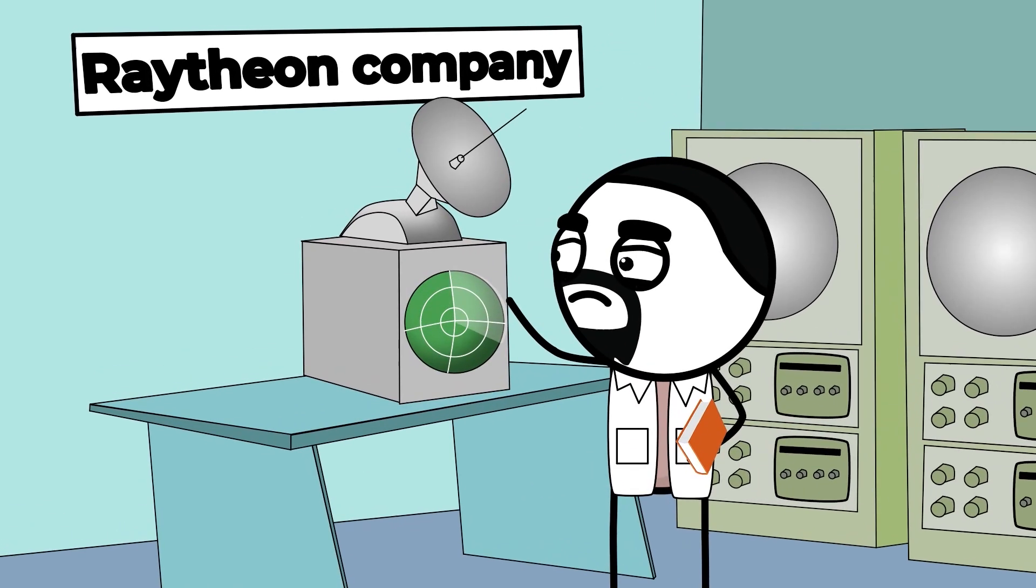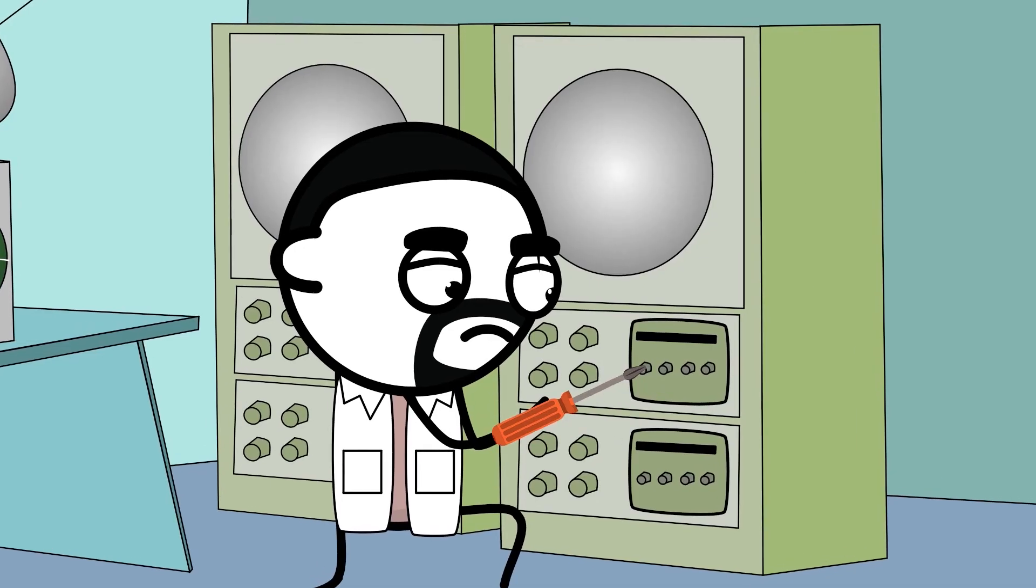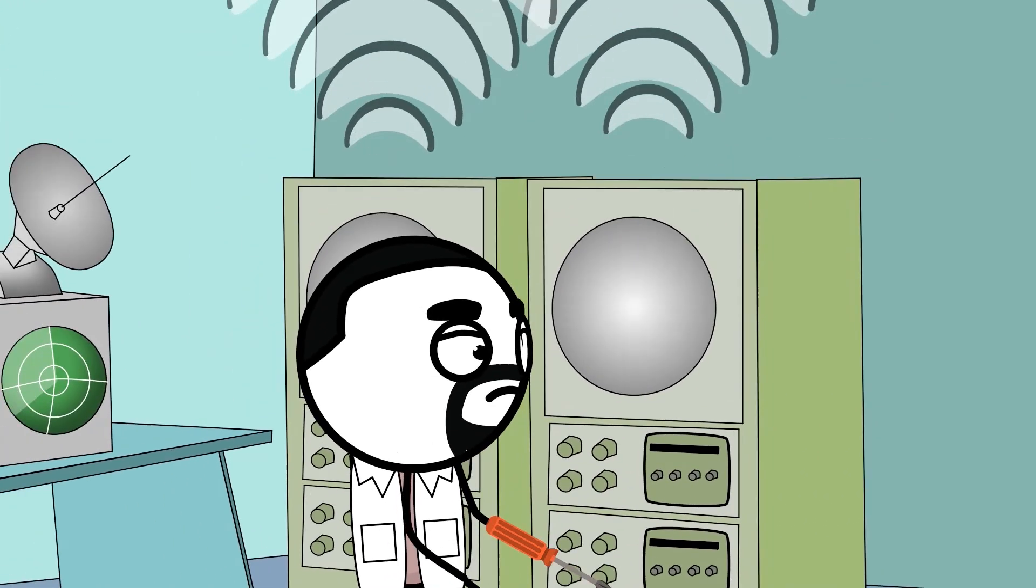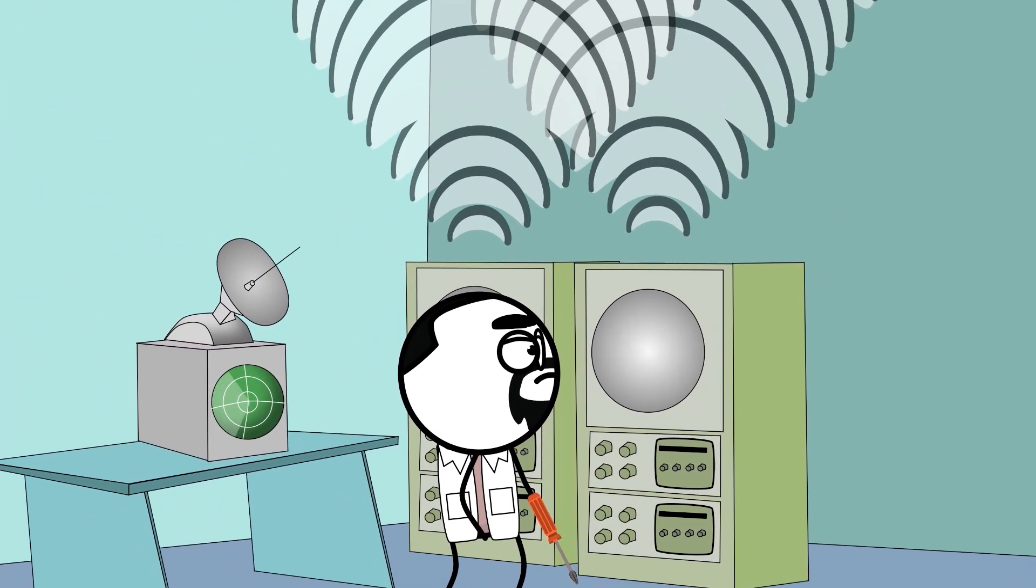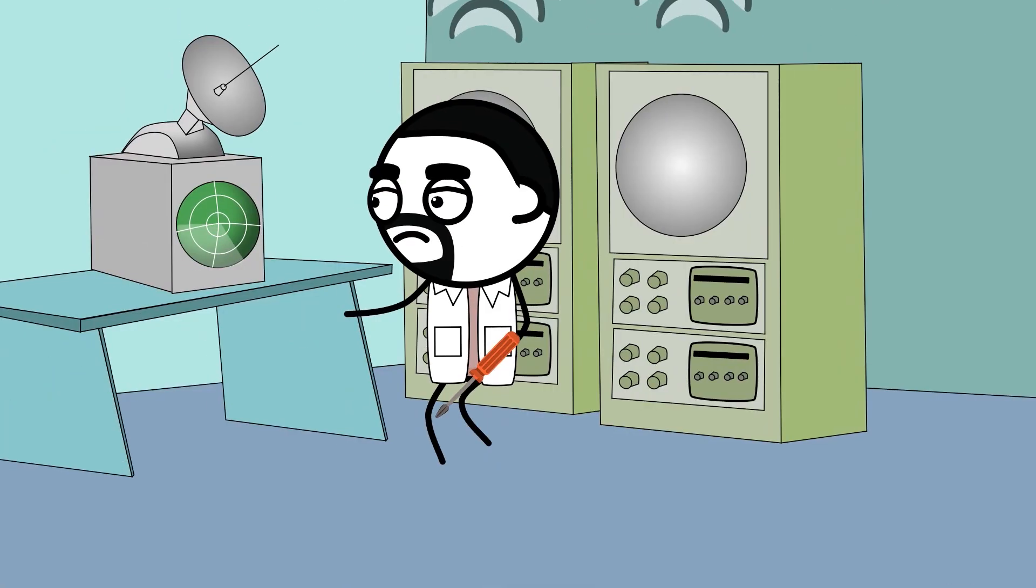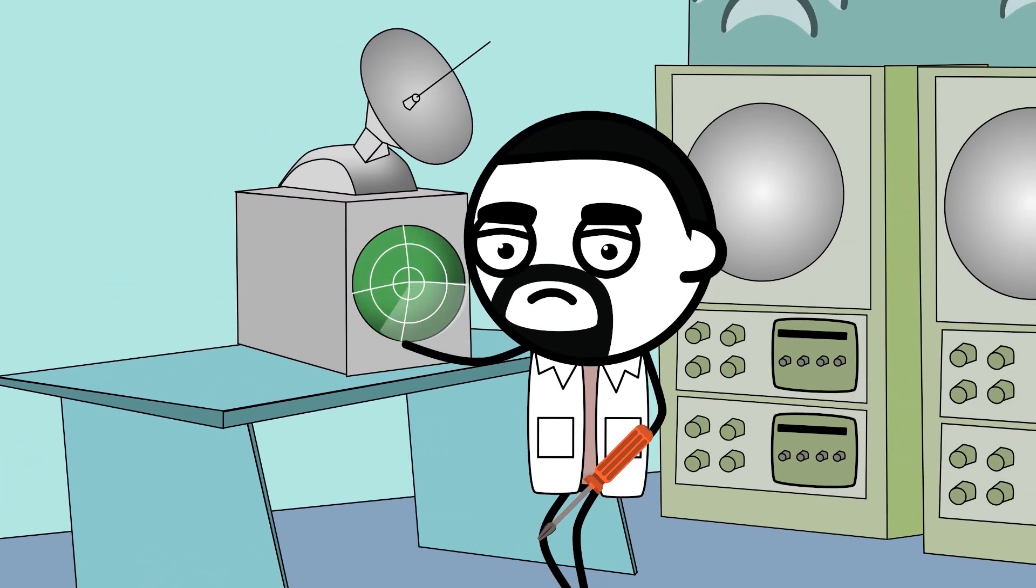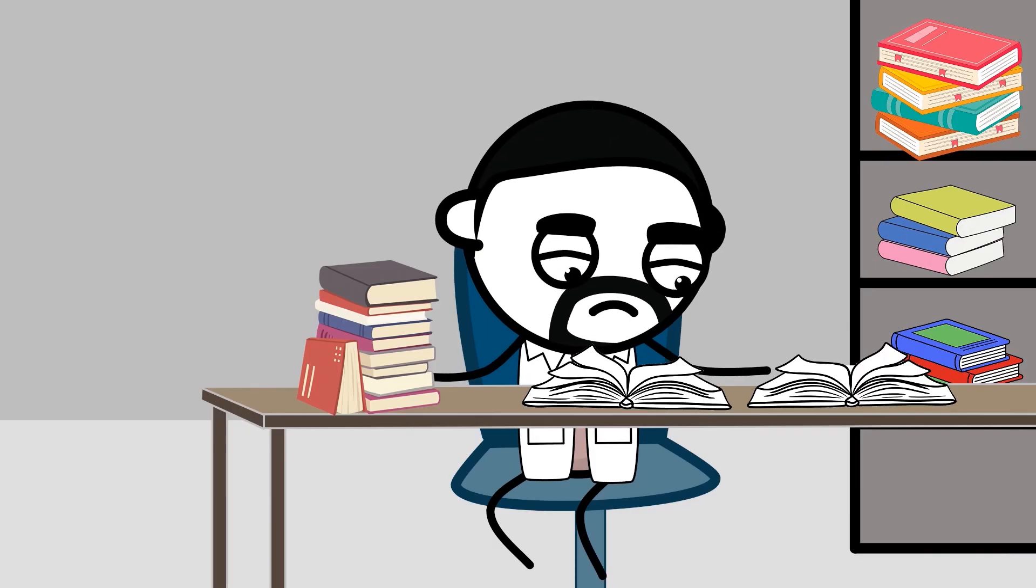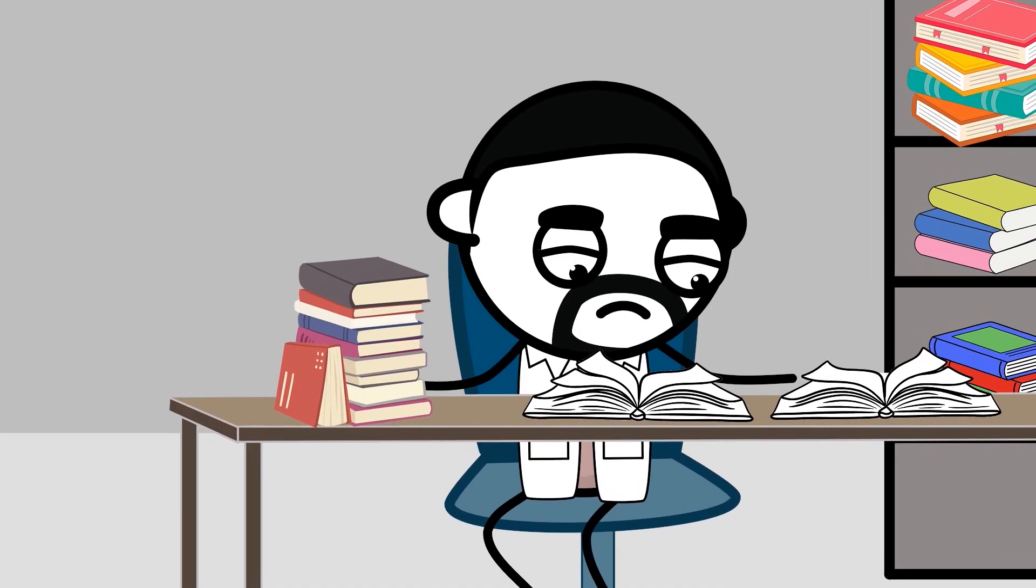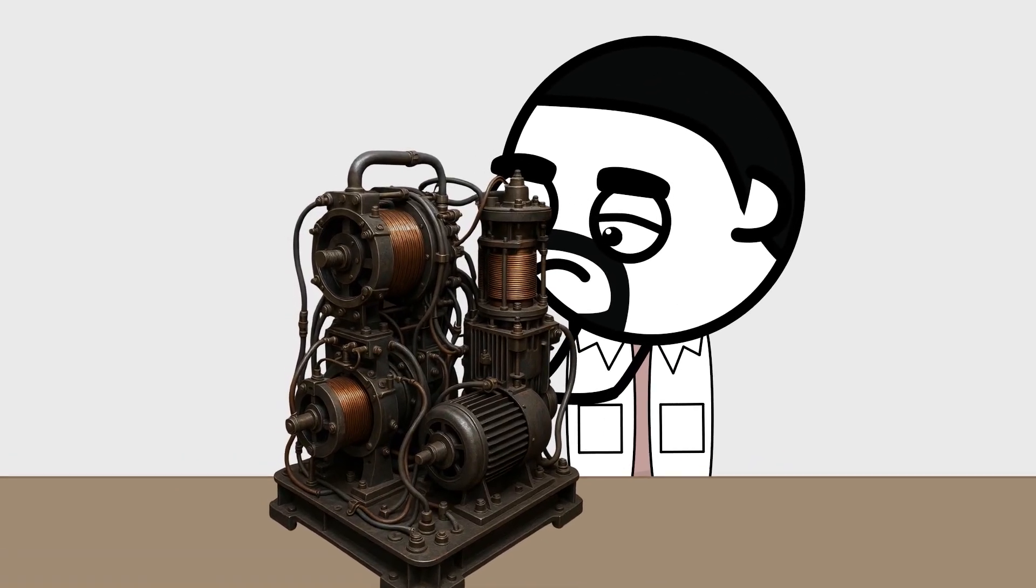At the Raytheon Company in Massachusetts, a man named Percy Spencer is the undisputed king of building magnetrons, the high-powered vacuum tubes that generate the microwaves for these radar systems. Now, Percy wasn't your typical lab coat-wearing scientist with a string of degrees. He was a self-taught genius, a man who had never finished elementary school but had a natural intuition for engineering that bordered on supernatural.